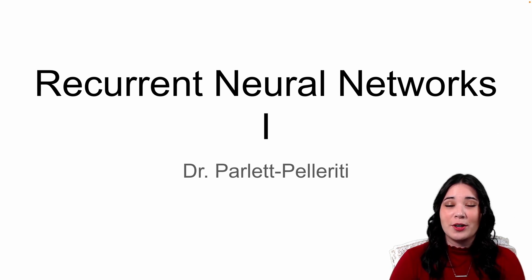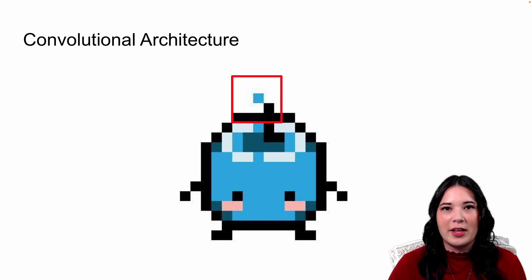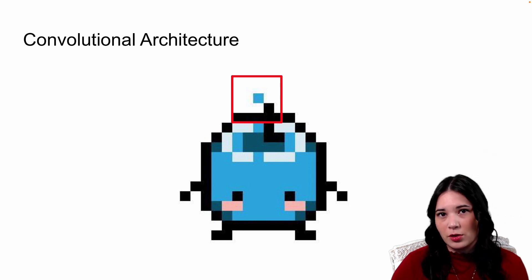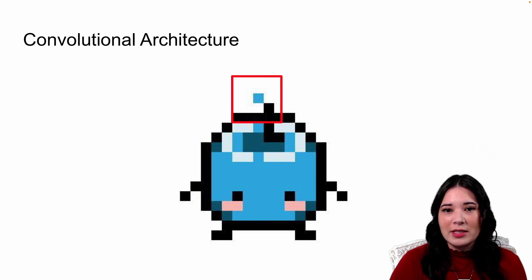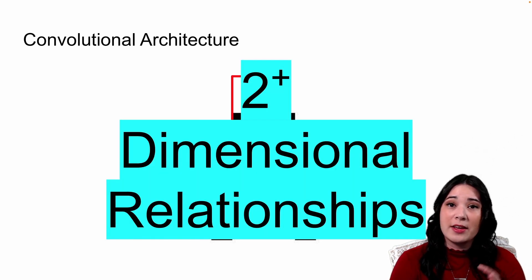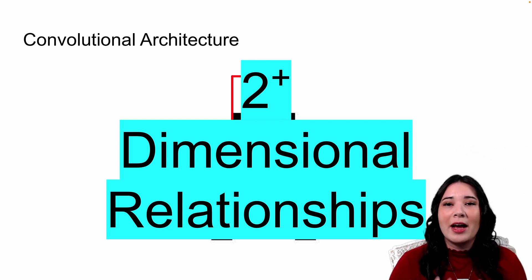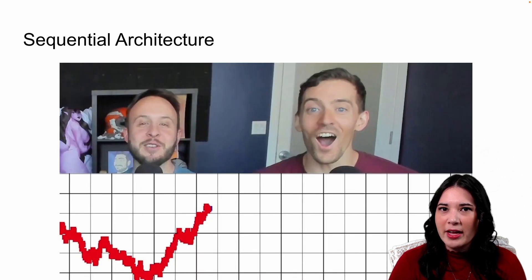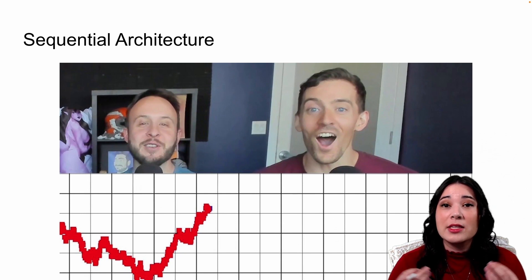Hello, and welcome to your first Recurrent Neural Networks lecture. In the previous section of lectures, we talked a little bit about convolutional architectures in deep neural networks. Convolutional architectures allowed us to take into account spatial relationships in data, like images. But another type of data that we might have and want to model with a neural network is sequential data.